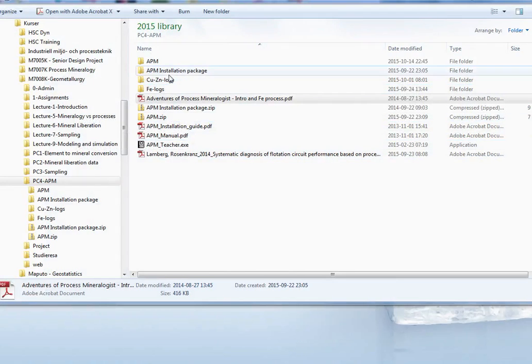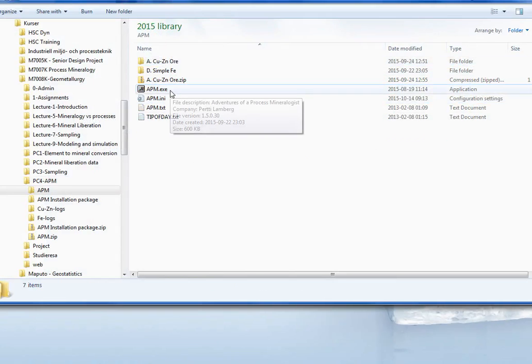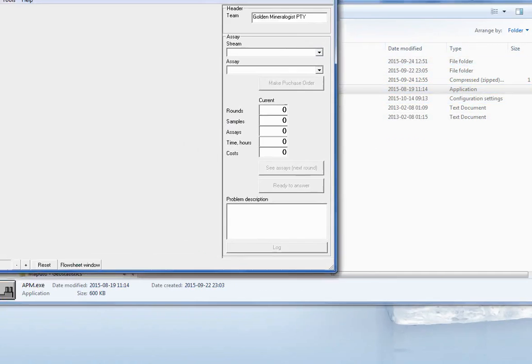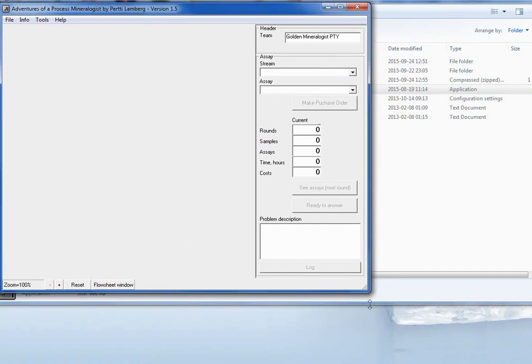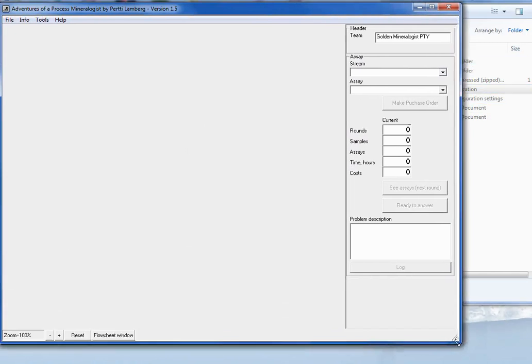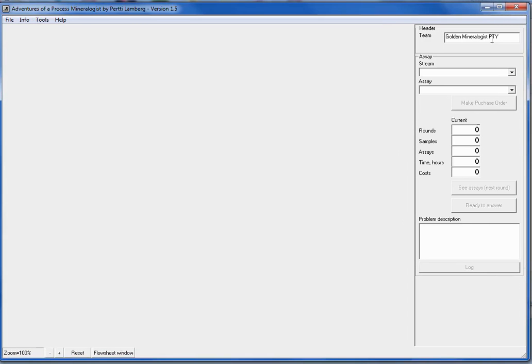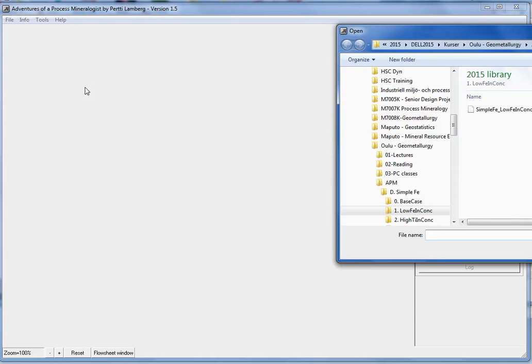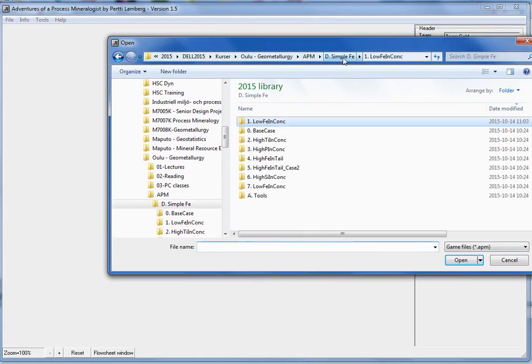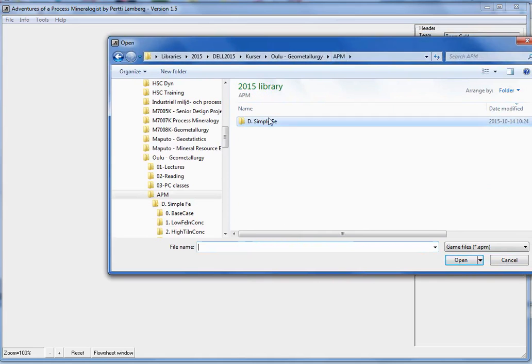So you start the apm.exe. And first you should change the name of the team. So I call this team gold.